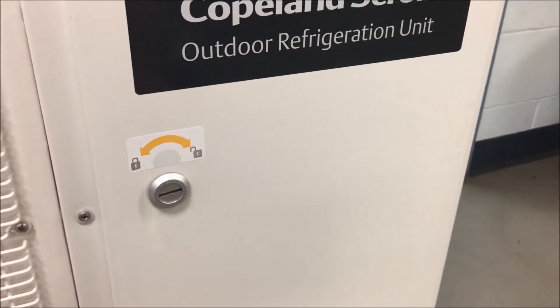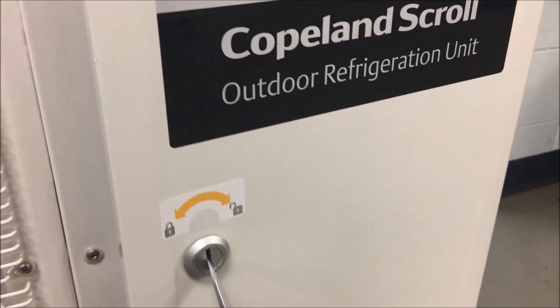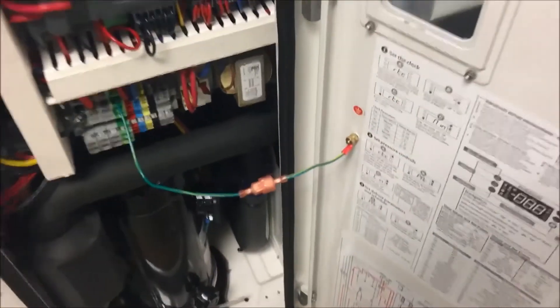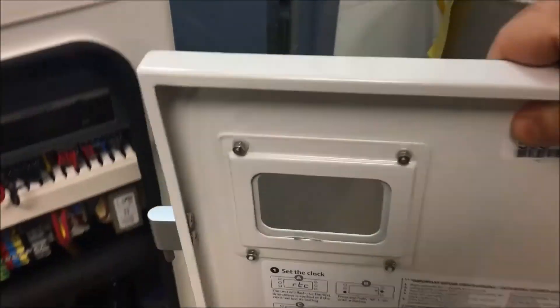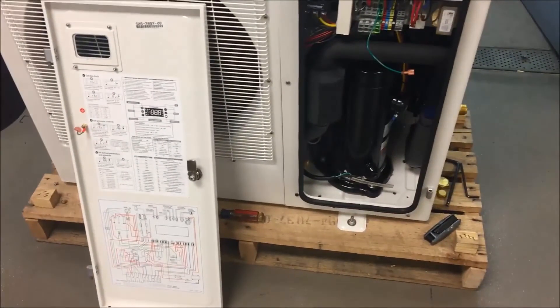To get into the unit, there's a quarter turn lock on the door. You just use a simple flathead screwdriver. You can open the door. Now the door is removable, so you can remove it from the hinges just by disconnecting the wire. Because the door is hinged, you can remove it and set it off to the side. This can be beneficial in windy situations where perhaps the door might swing around.